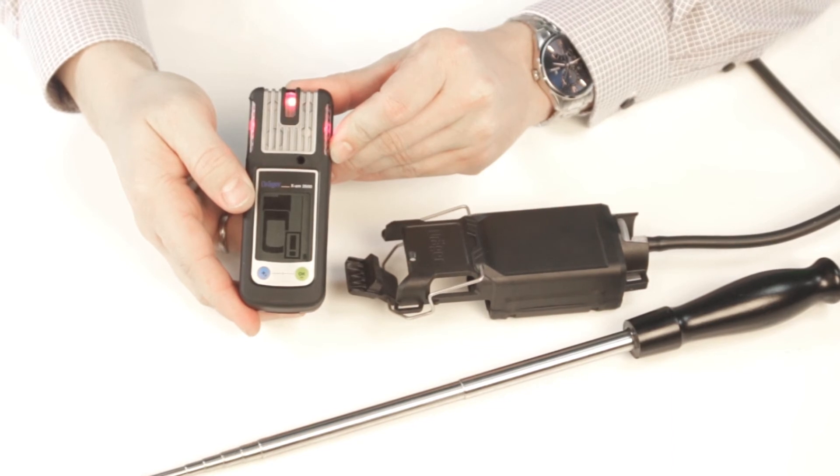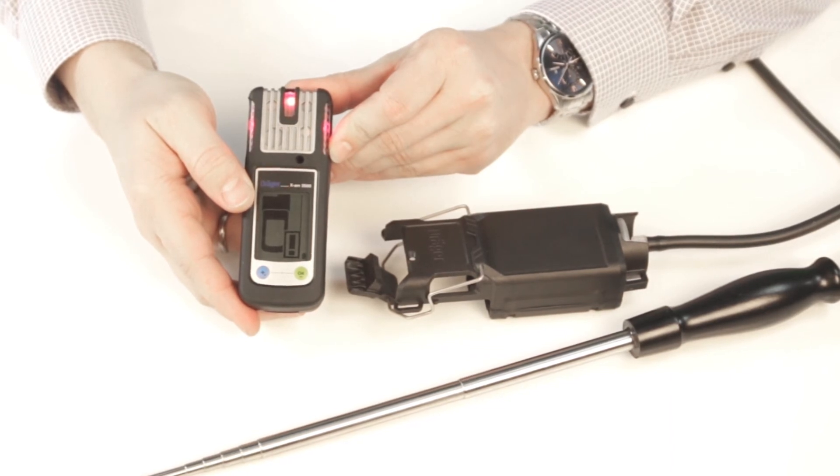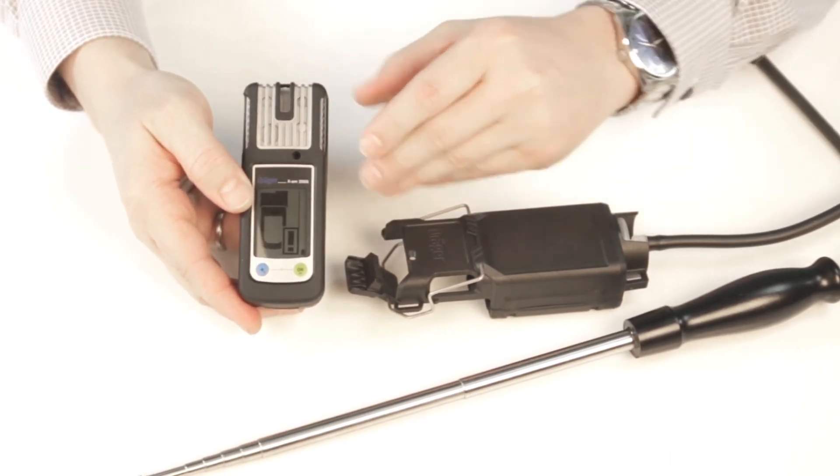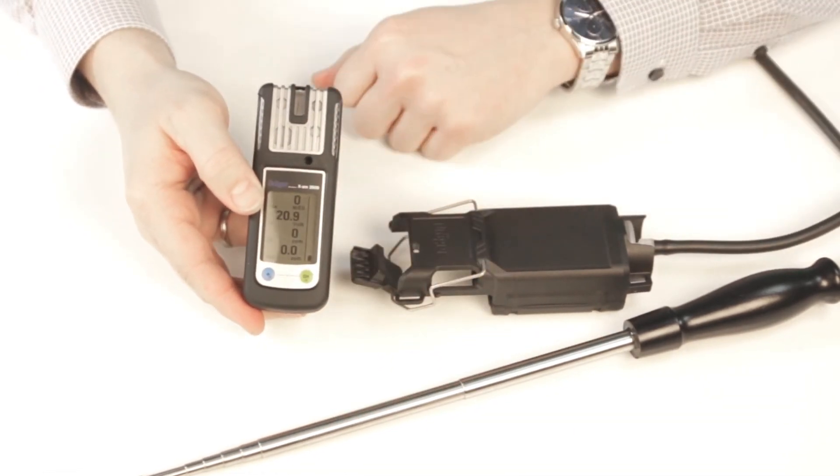A warning is shown on the display. Confirm this warning with the green OK button. The pump stops and you can use the XAM as a gas monitoring device again.